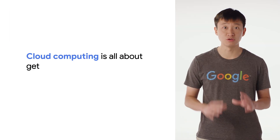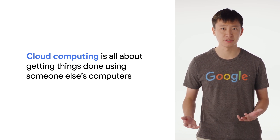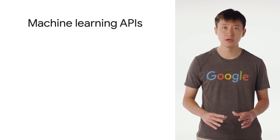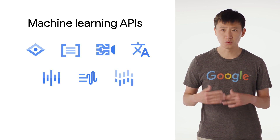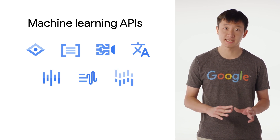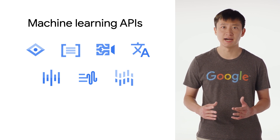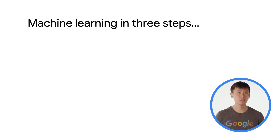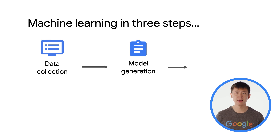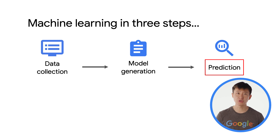In the first episode of Google Cloud Essentials, we talked about how cloud computing is all about getting things done using someone else's computers. In the machine learning world, Google Cloud shares its machine learning capabilities with developers through the machine learning APIs. With these APIs, you can gain insights from data using Google Cloud's pre-trained machine learning models, and they require zero prior knowledge of machine learning. Basically, Google Cloud handles the training aspect — gathering data and building a predictive model — allowing you to jump straight to the prediction aspect where you give the API data and get back information about that data.